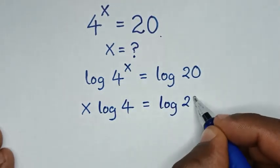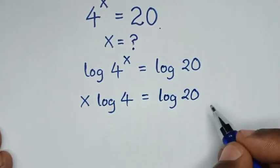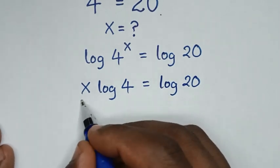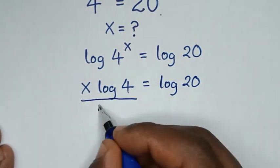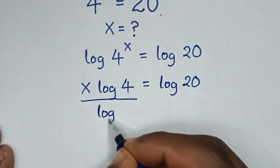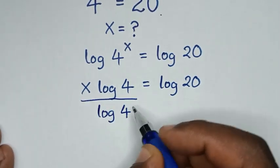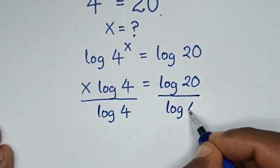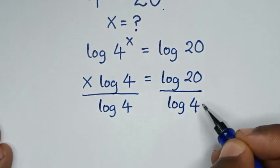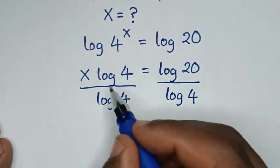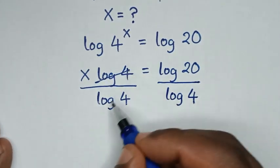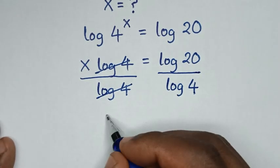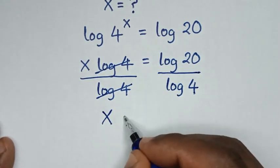Then we'll divide by log of 4 on both sides — here over log of 4 and here over log of 4 — so this log of 4 will cancel that log of 4. Then it will be x is equal to log of 20 over log of 4.